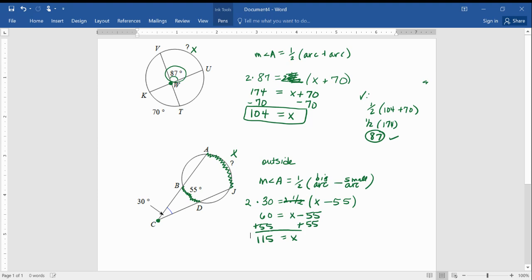So, that's 115. Now, I'm glad we got a number that's bigger than 55. Why? Well, it's supposed to be the bigger arc, right? So, if we got a number that wasn't bigger than 55, then that's probably wrong.